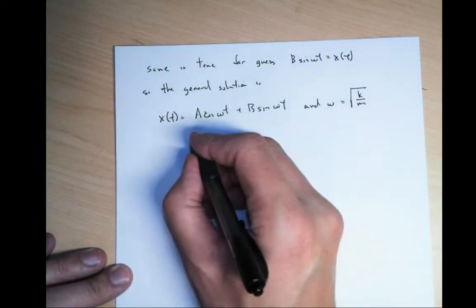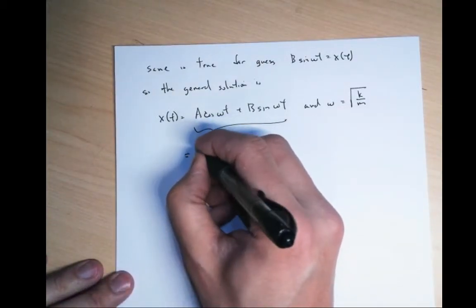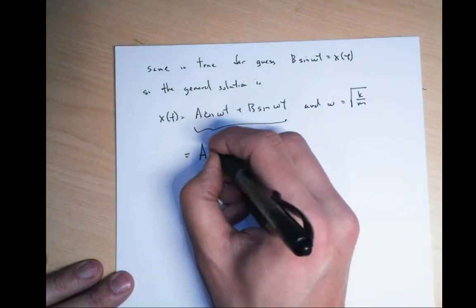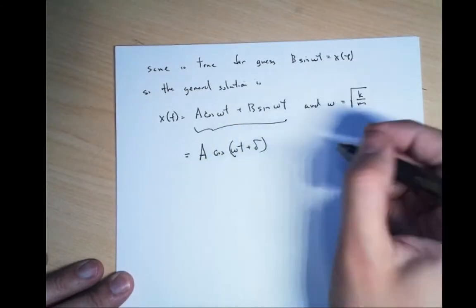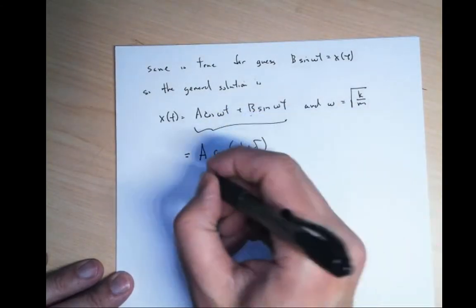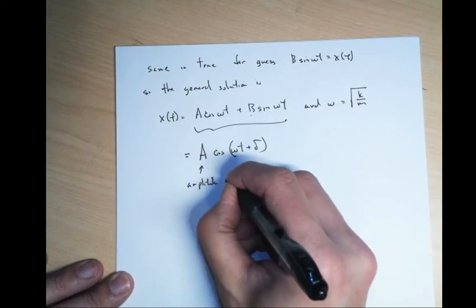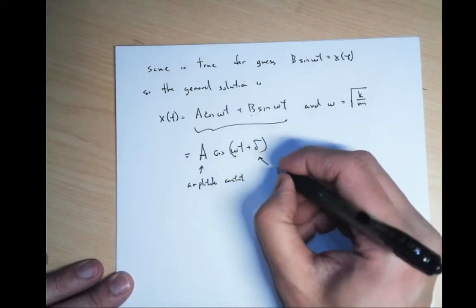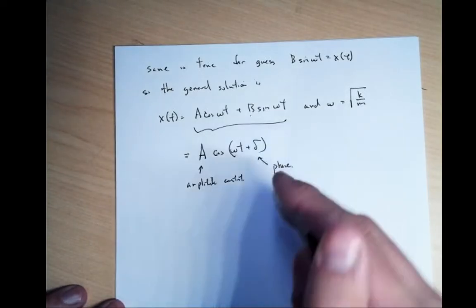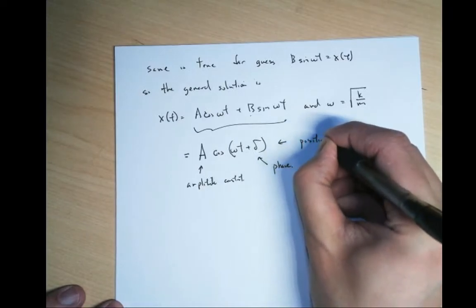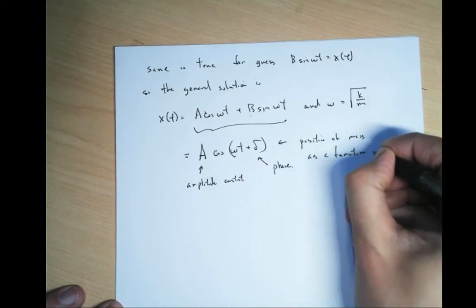You can combine these together: x of t equals A cosine(omega t + delta). Rather than two constants A and B, you use one constant A, which is the amplitude, and delta, which is called the phase. This defines the position of the mass as a function of t.